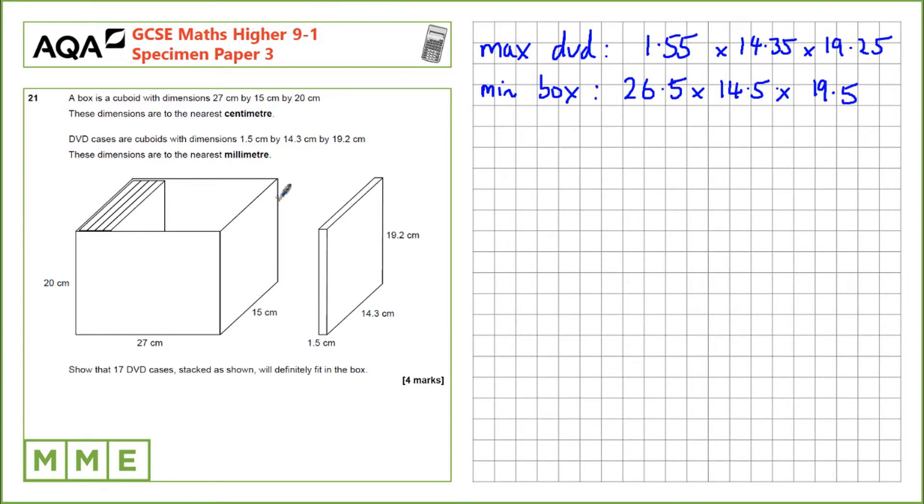Now let's use these to make sure it fits into the box. Let's have a look at first the depth. So 15, that's these two measurements here. The DVD definitely fits into the box. 14.35 is less than 14.5. And the same thing for the height. 19.25 is definitely less than 19.5.